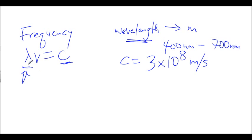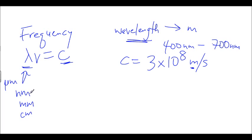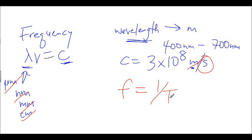Lambda is our wavelength, and the reason we need it in meters is because of the units in our c value — meters per second. Our wavelength might be in nanometers, micrometers, or centimeters depending on what kind of wave we're looking at. We notice we've got length units and a length-per-time unit, so these units are going to divide out, leaving us with per second. Frequency is equal to 1 over some time unit, and frequency is typically in hertz.